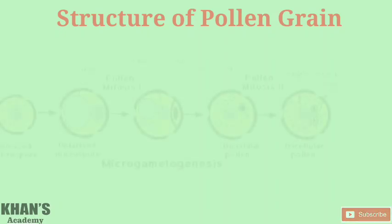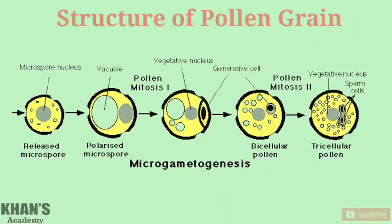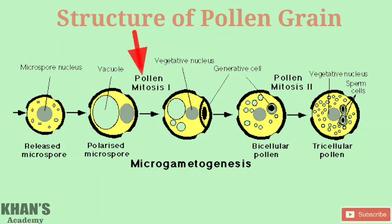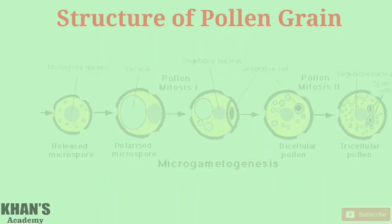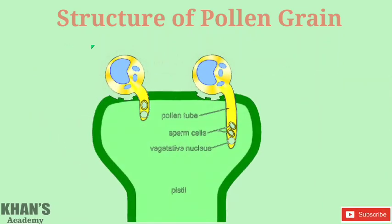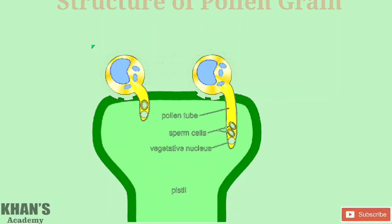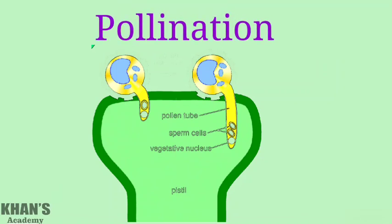Formation of the microspore is the beginning of the male gametophyte. The mature pollen grain undergoes a first mitotic division to produce a bigger naked vegetative cell and a small thin-walled generative cell. The second mitotic division takes place in the generative cell only, and gives rise to two non-motile male gametes — either inside the pollen grain or in the pollen tube. Now the pollen grain is ready for pollination and fertilization.